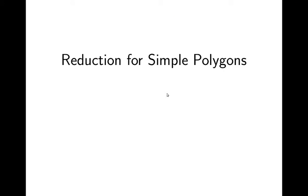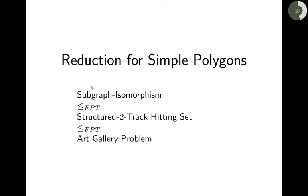Okay, so let me tell you now how we prove this. I want to show you the reduction for simple polygons. And somehow this goes, the reduction goes in two steps. First is the reduction from subgraph isomorphism to this intermediate problem called structured 2-track hitting set, and then from structured 2-track hitting set to the art gallery problem. I will not tell you this first reduction, it's technical, and it has been done for a lot of similar problems before, but I will explain what is structured 2-track hitting set, and I will show you the reduction to art gallery problem, but only to the point guard variant.